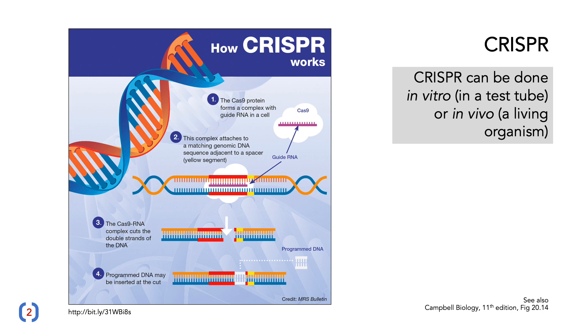CRISPR can be done in vitro, so in a test tube in a laboratory setting, or it can now be done in vivo, so in a living organism. This is one key way to make genetically modified organisms.